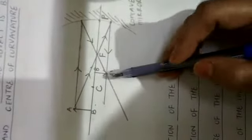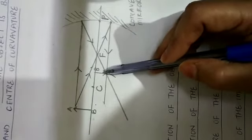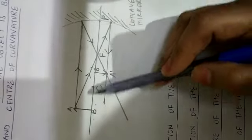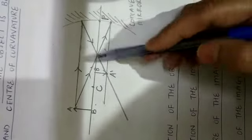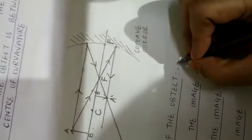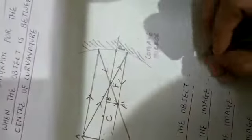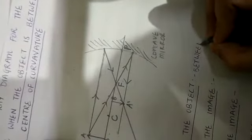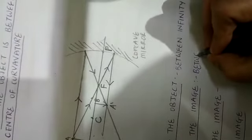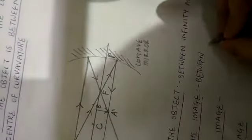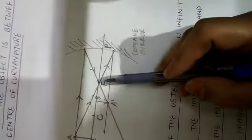So depending upon this ray diagram we will write down our conclusion. Our ray diagram is completed. The position of the image is between C and F — between center of curvature and focus. The position of the object is between infinity and center of curvature, and our image is formed between C and F, that is between center of curvature and principal focus.